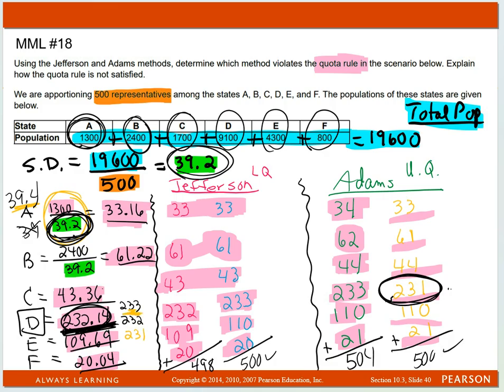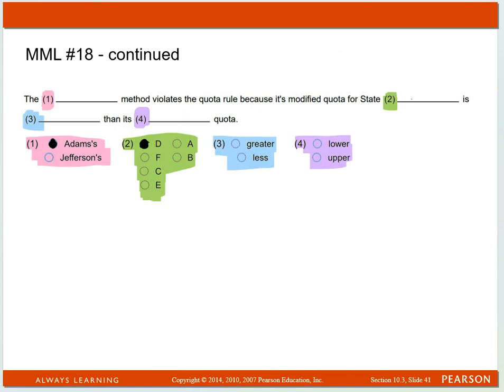So 231 is less than the lower quota. Less than the lower quota. And that's the answer.